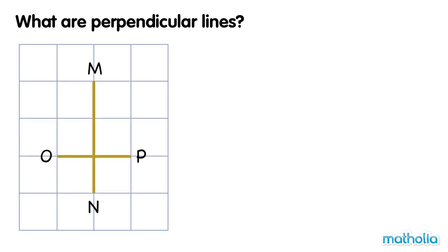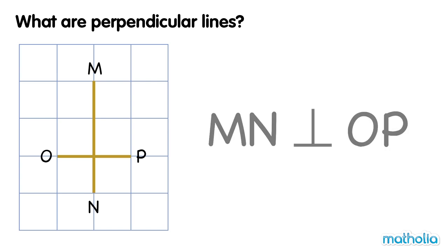To show that lines are perpendicular, we write this symbol. Look at the lines in the grid. The line MN and the line OP are perpendicular. We can write this as MN is perpendicular to OP.